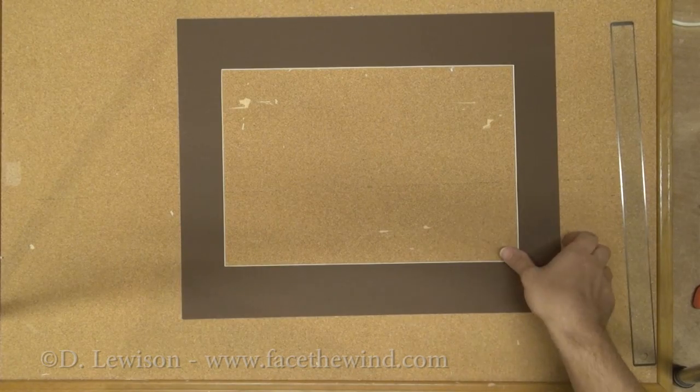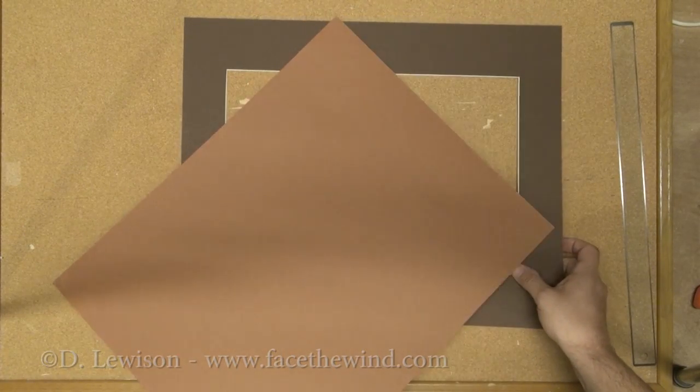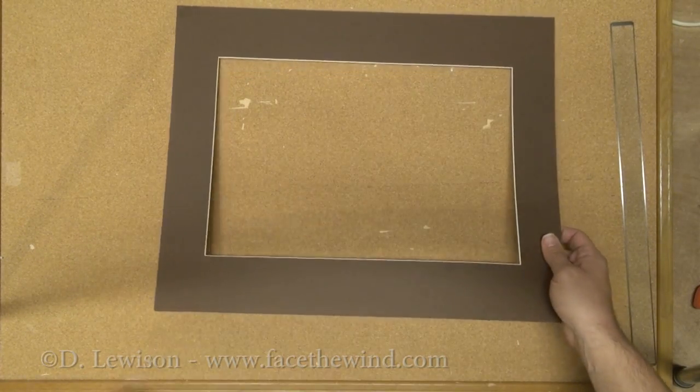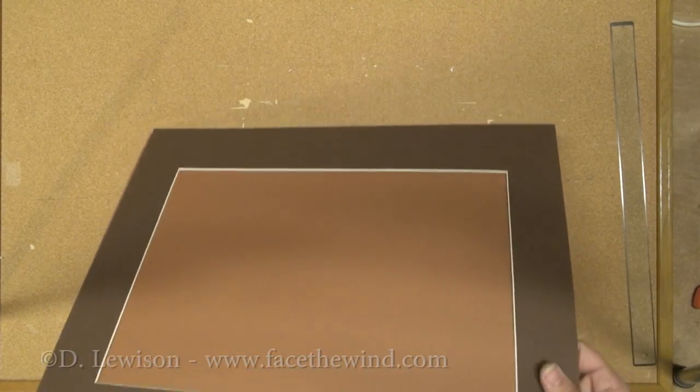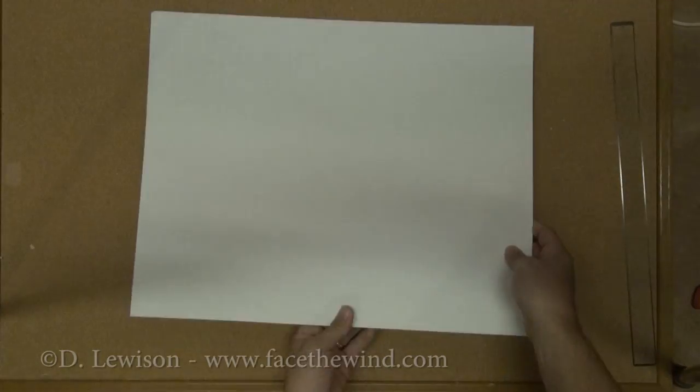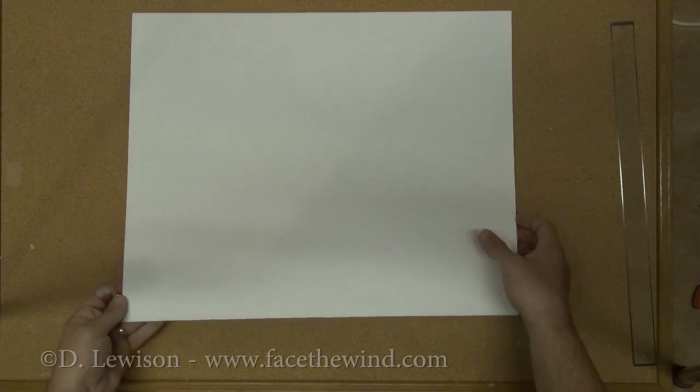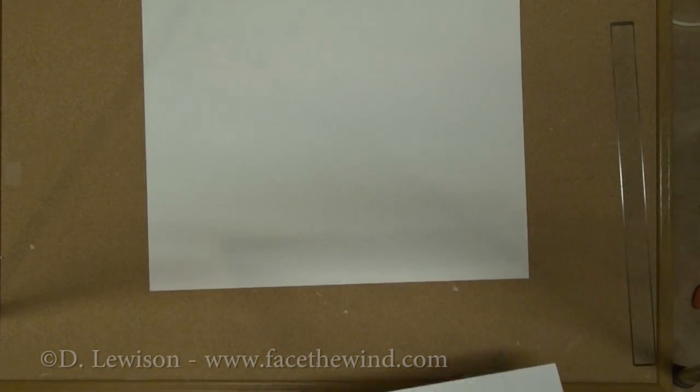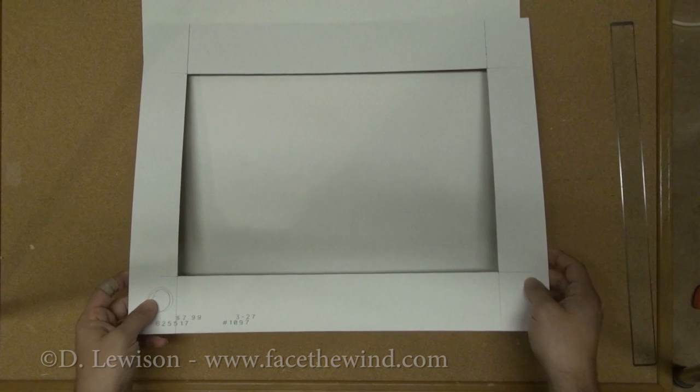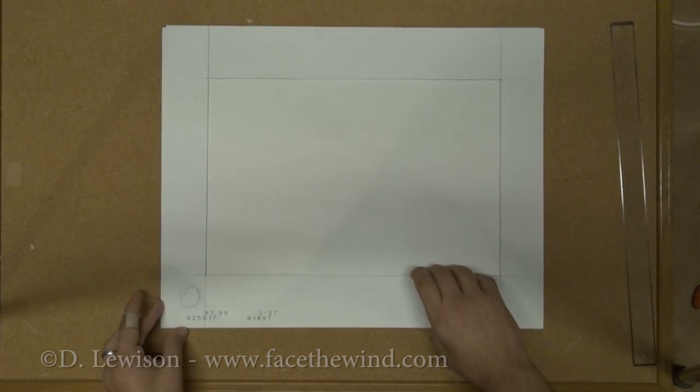Alright, so now I have the inner mat cut out and now I want to add the middle mat. Like this. So what I need to be careful to do, I place the inner mat on top of the middle mat like so.